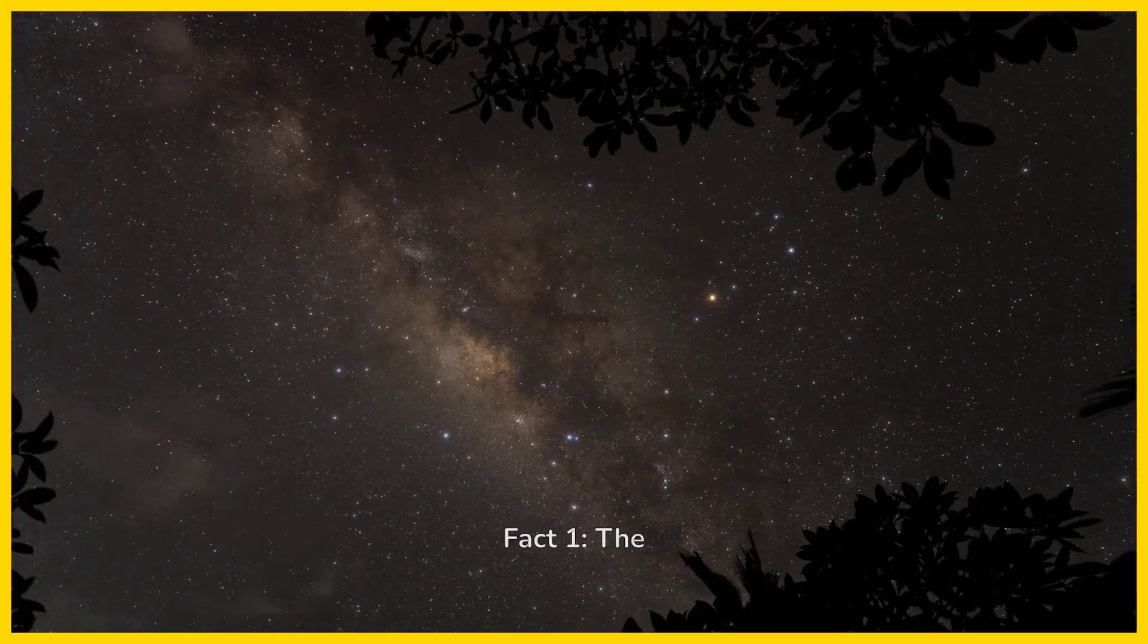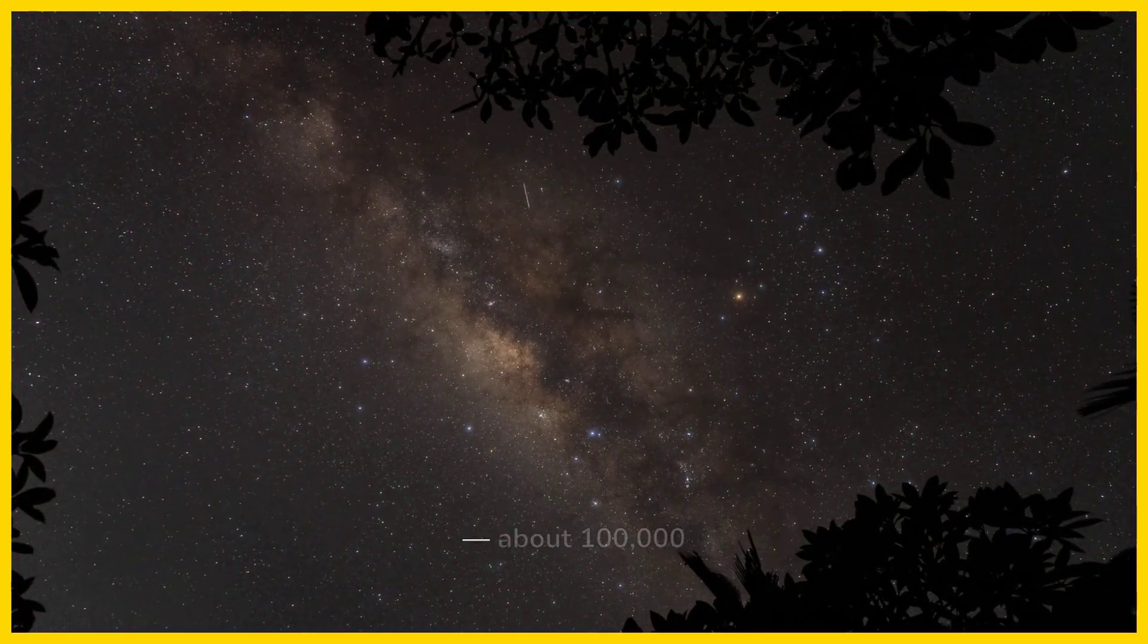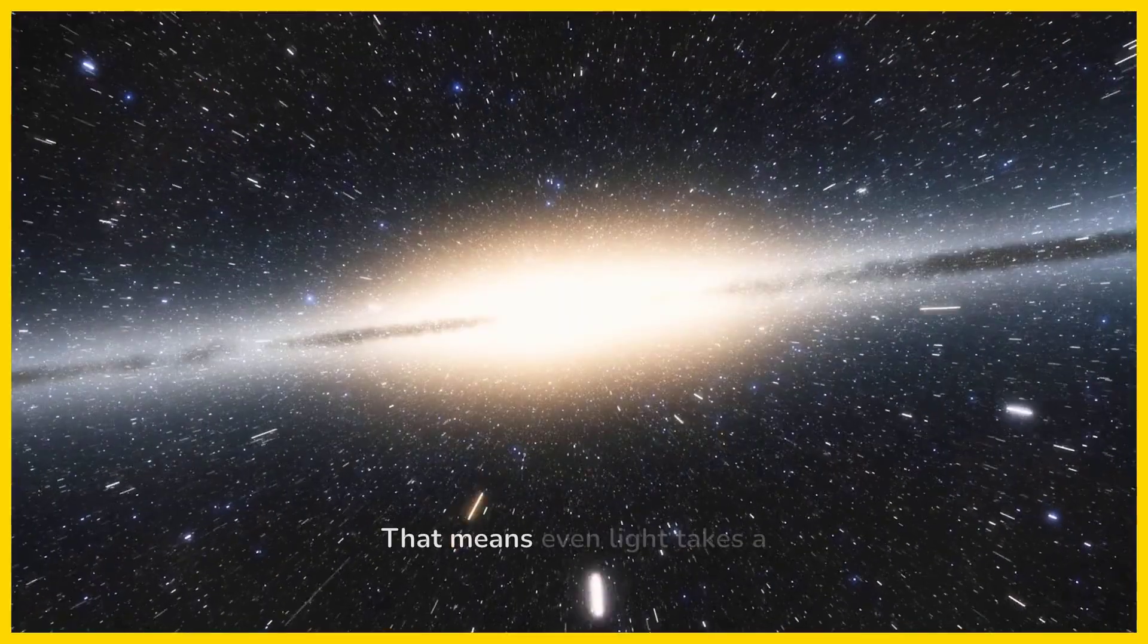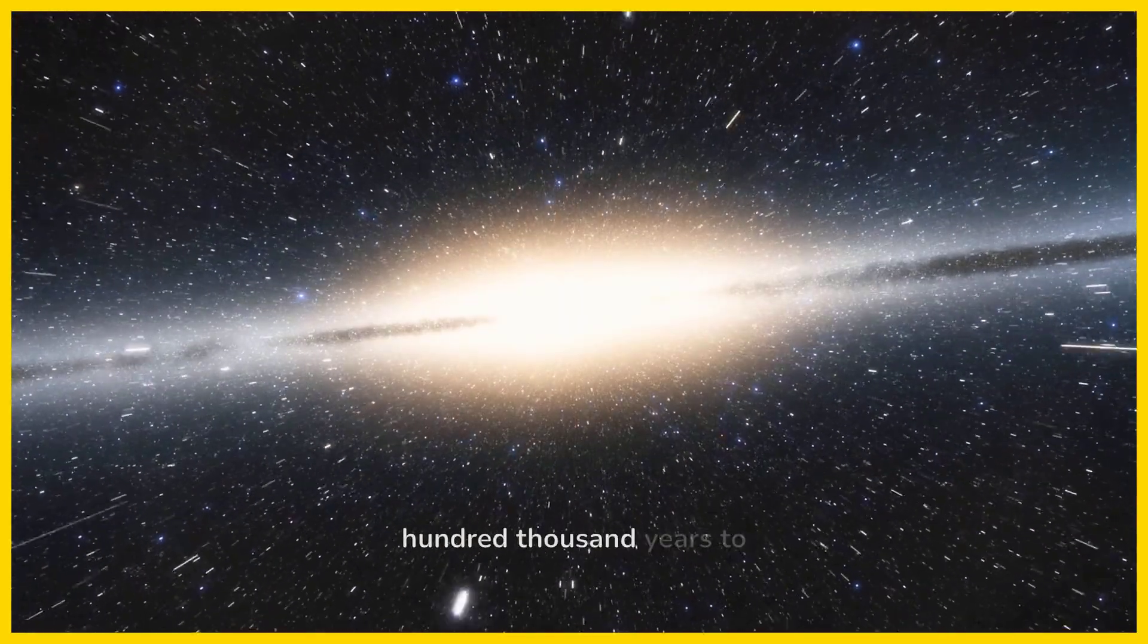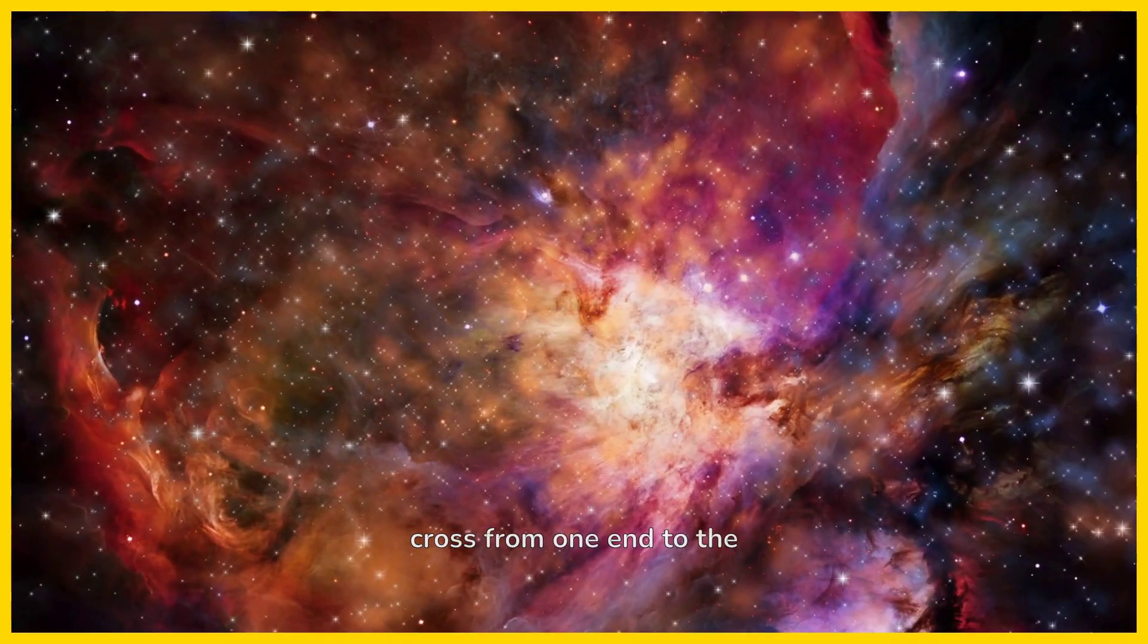Fact 1. The Milky Way is massive, about 100,000 light years wide. That means even light takes 100,000 years to cross from one end to the other.